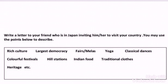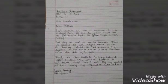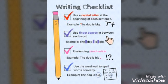Here is the question for you: write a letter to your friend who is in Japan, inviting him or her to visit your country. You may use the points given in the box — rich culture, hill stations, Indian food — sum these up and write. Your final letter will look like this: address, date, salutation, the main body in three paragraphs, then the subscription 'Yours lovingly,' and your name. After writing, check whether you have written capital letters correctly and given the correct punctuation before you submit.